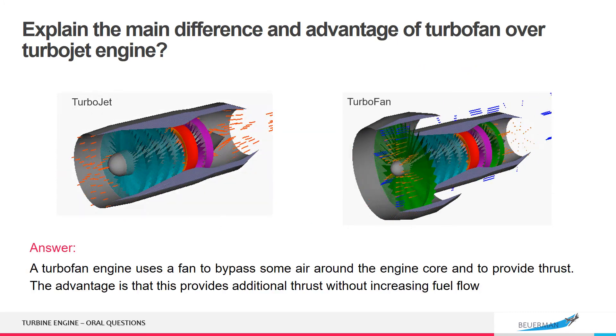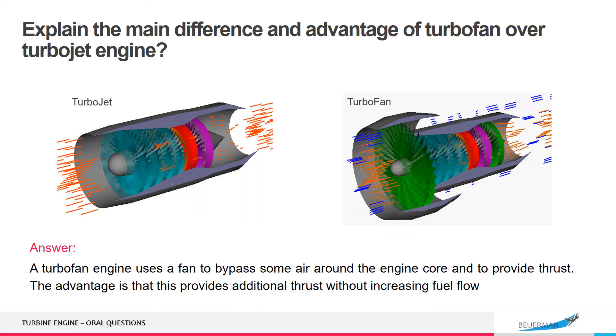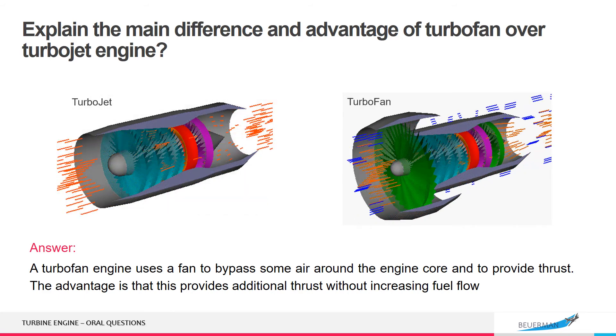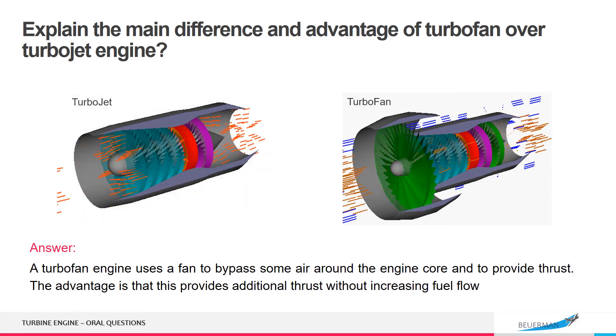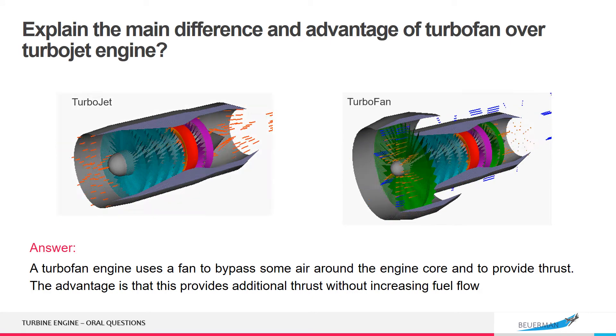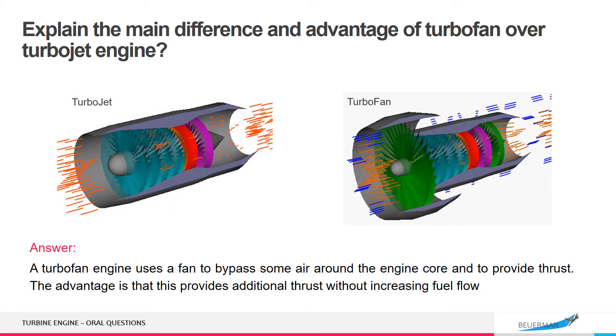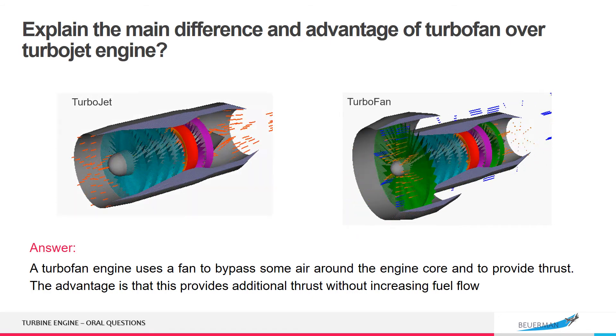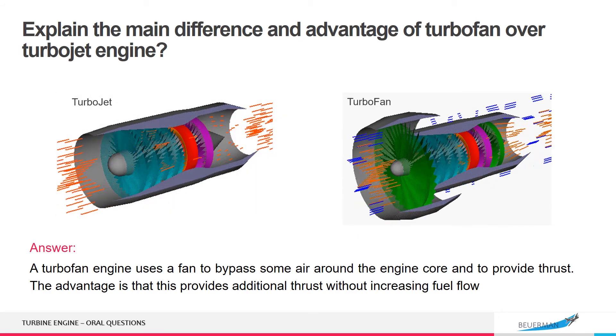A turbofan engine uses a fan to bypass some air around the engine core and to provide thrust. The advantage is that this provides additional thrust without increasing fuel flow.